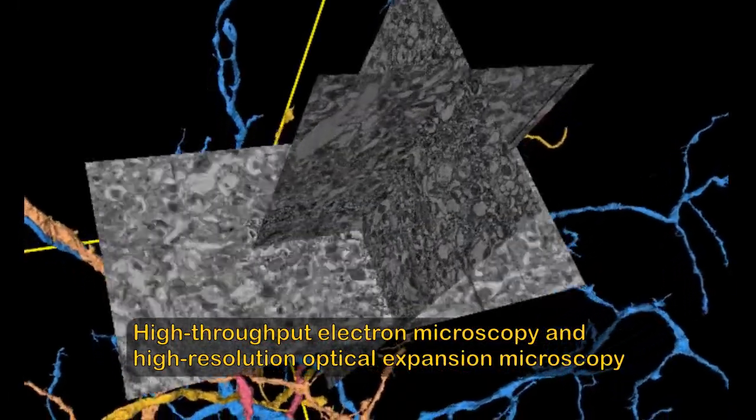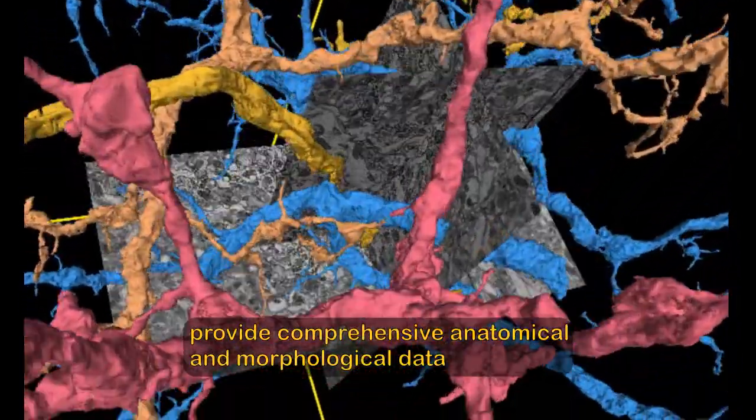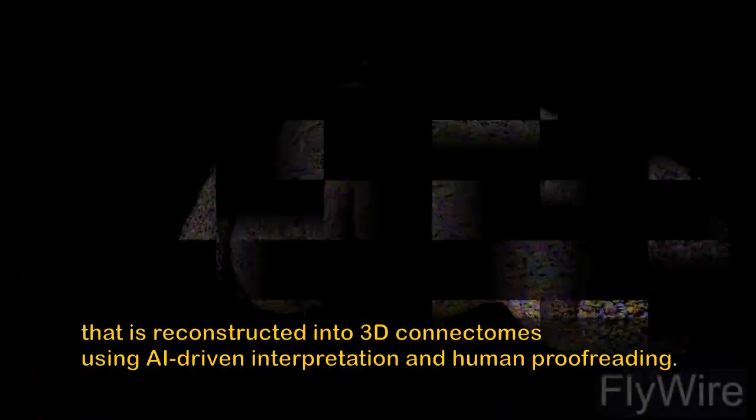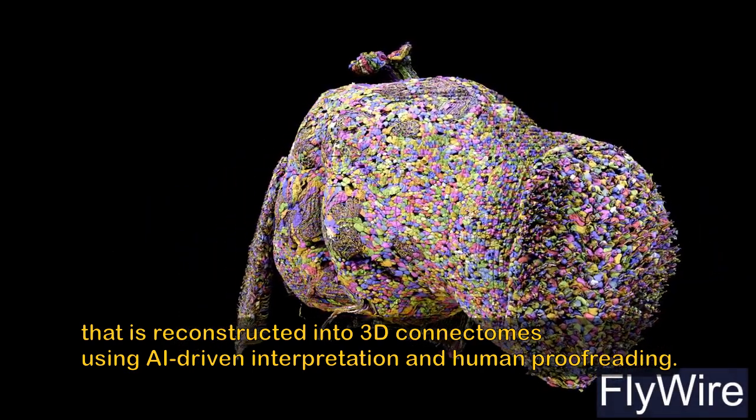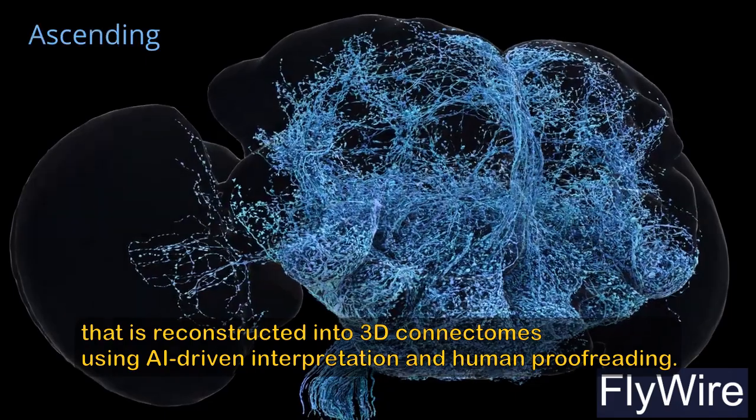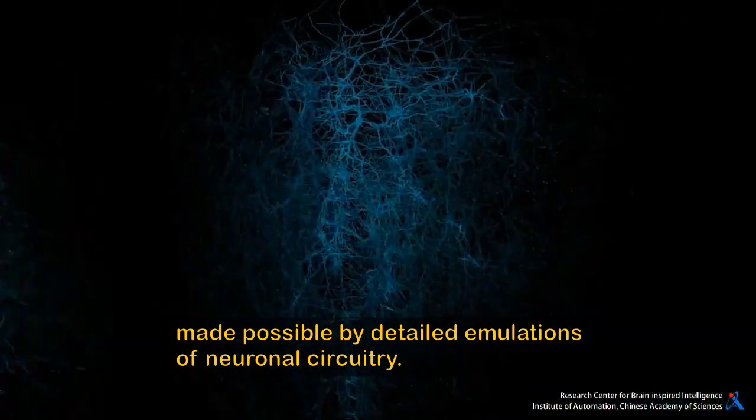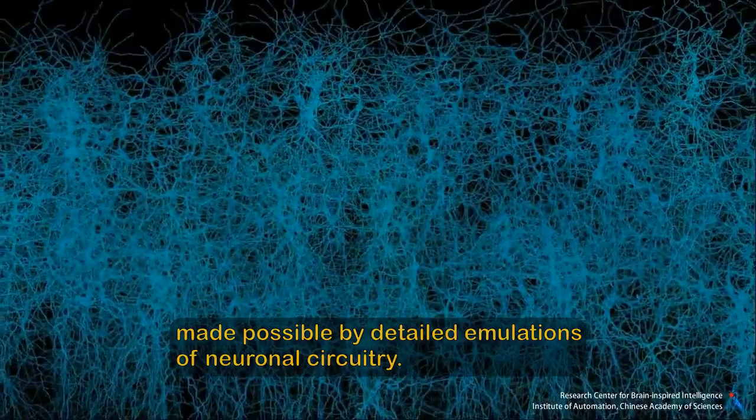High-throughput electron microscopy and high-resolution optical expansion microscopy provide comprehensive anatomical and morphological data that is reconstructed into 3D connectomes using AI-driven interpretation and human proofreading. We are entering a new paradigm in neuroscience, shifting from the discovery of neural correlates to causal understanding made possible by detailed emulations of neuronal circuitry.